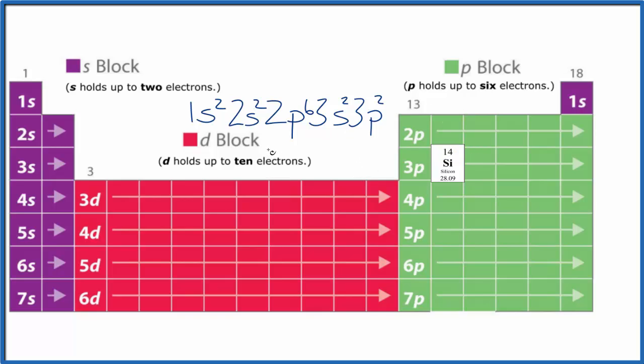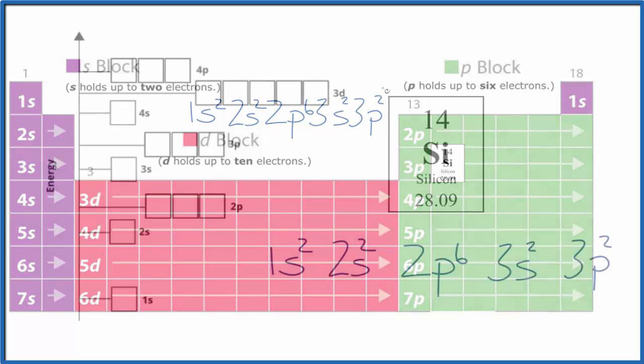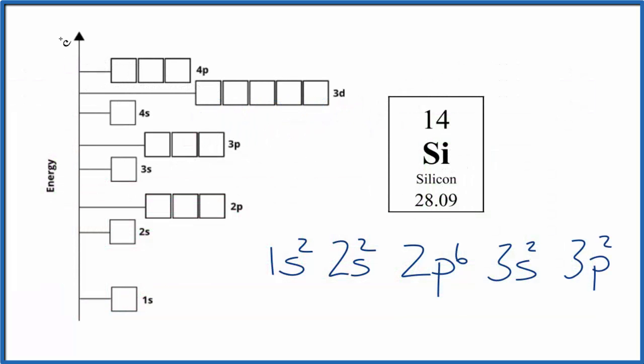Now we can write the orbital diagram for silicon. All we're doing with the orbital diagram here, like the electron configuration for silicon, we're trying to figure out where the electrons are around the nucleus of the silicon atom. You can imagine this is our nucleus, and we're building these energy levels up as we go up our diagram here. So let's start.